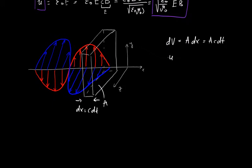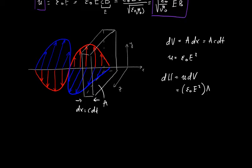The energy density u equals ε₀E², so the total energy dU equals u·dV equals ε₀E²·Ac·dt. Therefore, the energy crossing area A per time dt — that is, (1/A)(dU/dt) — equals ε₀cE².